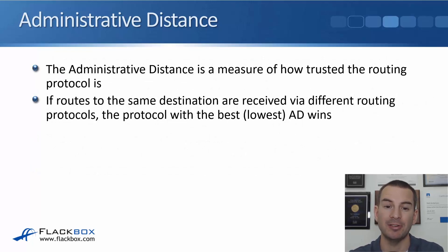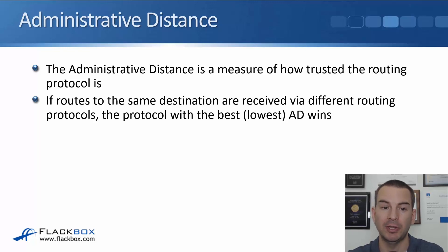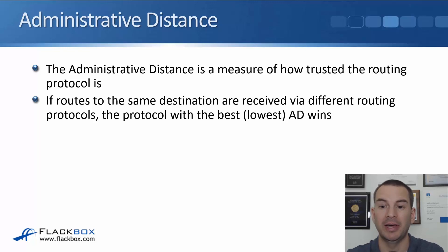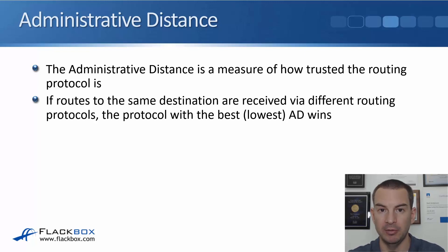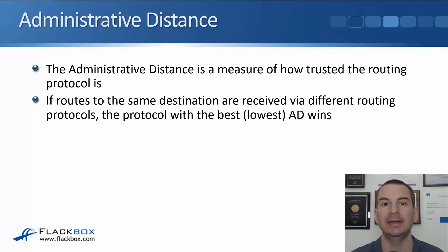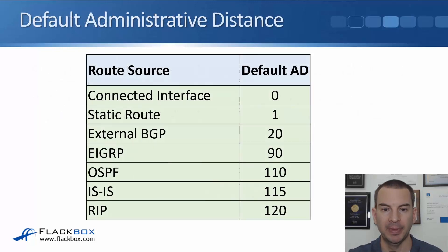The router needs to use a different method to choose when routes to the same destination are received from different routing protocols. That's what we use the administrative distance for. The administrative distance is a measure of how trusted a particular routing protocol is. If routes to the same destination are received via different routing protocols, the protocol with the best — which is the lowest — AD value wins. With the metric, the lowest is best; with AD, it's the same — the lowest number is best.